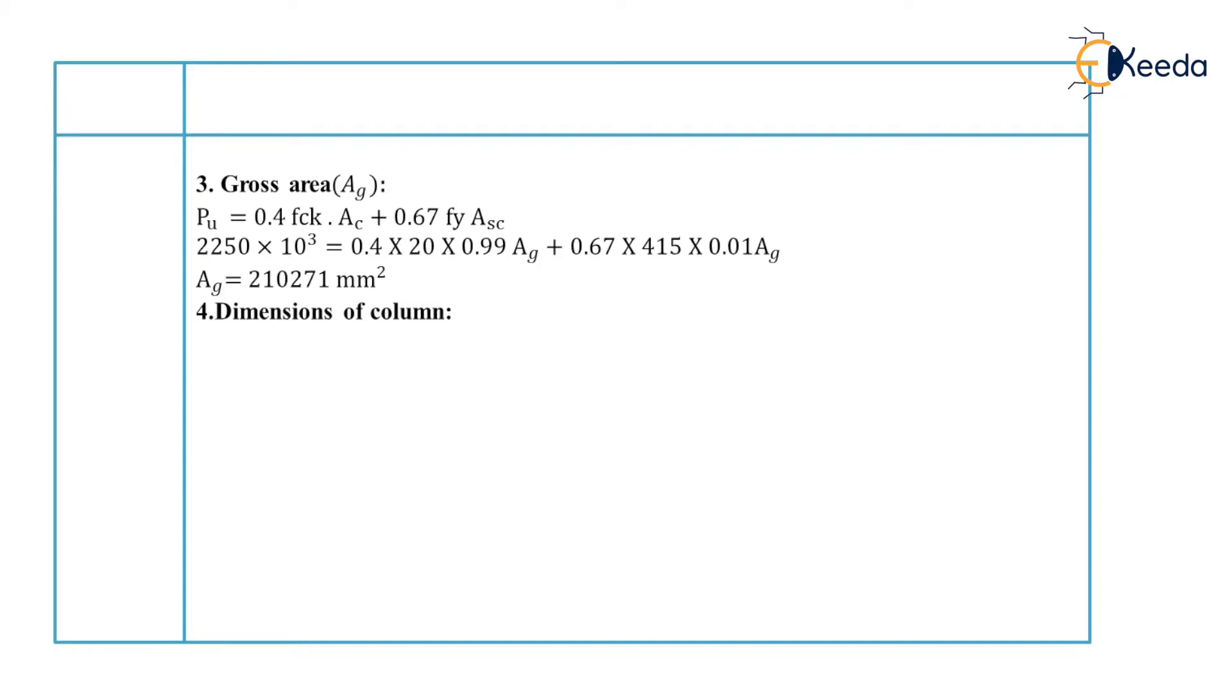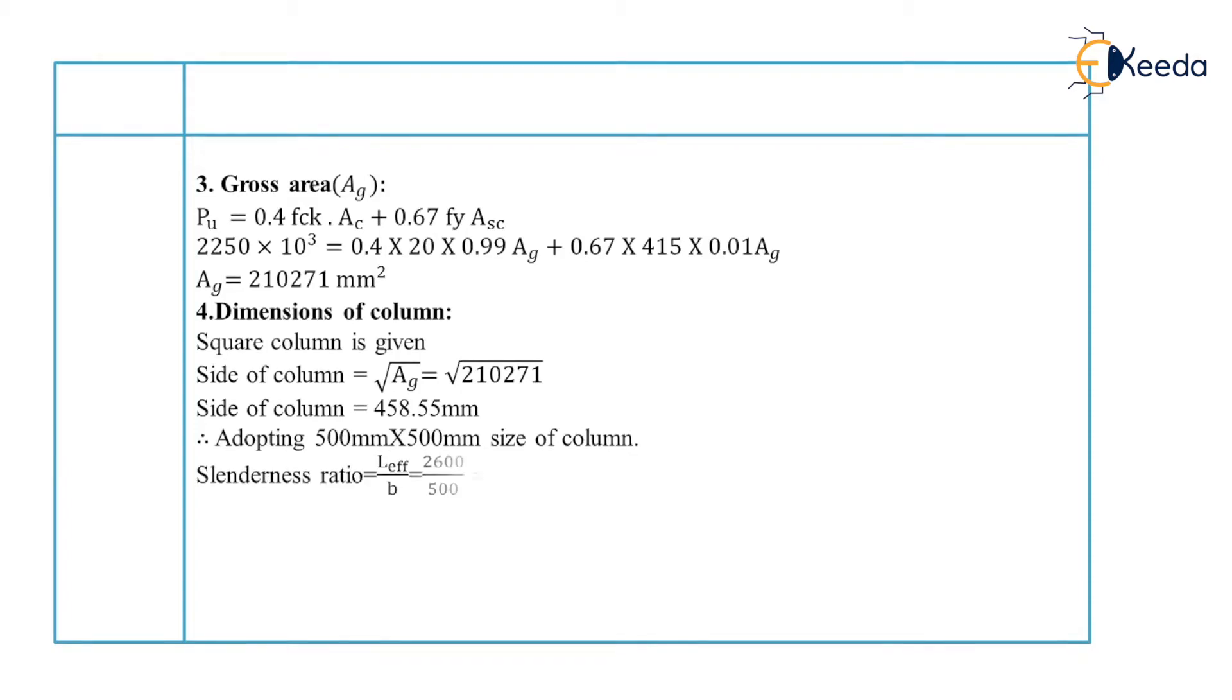Now we will find out the dimensions of column. Here we will consider the square column. Therefore side of column is equal to square root of 210271 that is the gross area. So side of column will be equal to 458.55 mm. Therefore we will consider the higher value and we will adopt 500 mm as a side of column. And therefore the size of column is equal to 500 mm by 500 mm.